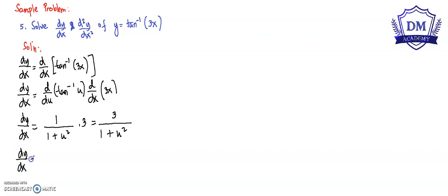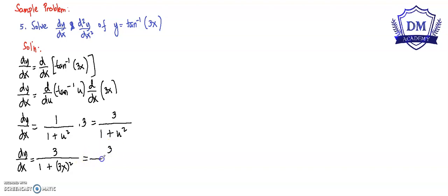So the derivative of y with respect to x is equal to 3 all over 1 plus (3x) squared, which is 9x squared. So our dy/dx is equal to 3 all over 1 plus 9x squared. This is our first derivative.